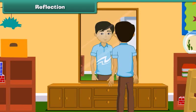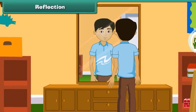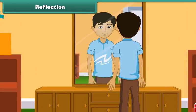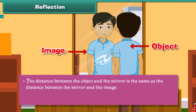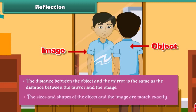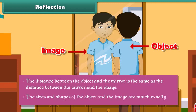When you position yourself in front of a mirror, what you see is your reflection. You are the object and the reflection is the image. Here are some interesting facts about reflections: the distance between the object and the mirror is the same as the distance between the mirror and the image, and the sizes and shapes of the object and the image match exactly.